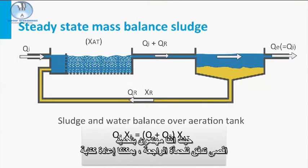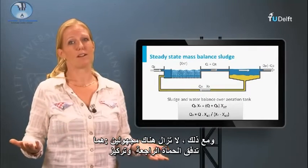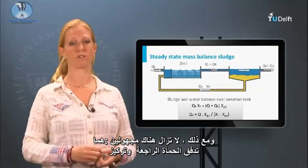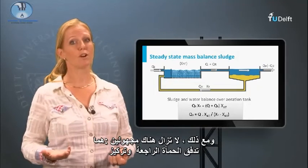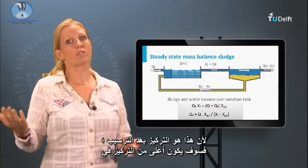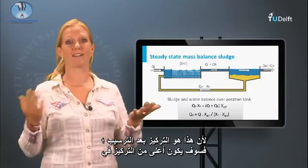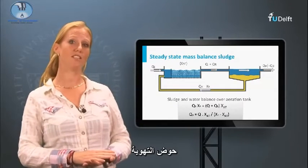Since we are interested in determining the applicable return sludge flow, we can rewrite the equation. However, there are still two unknowns: the return sludge flow and the concentration of the return sludge. Because this is the concentration after settling, it will be higher than the concentration in the aeration tank.